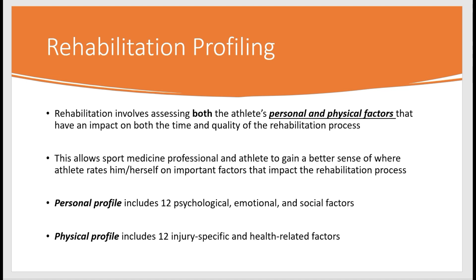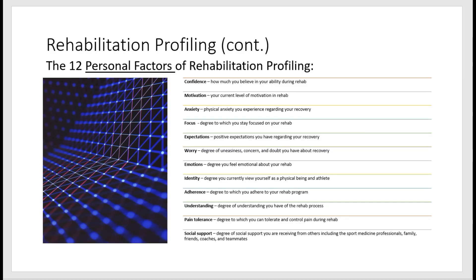The personal profile includes 12 psychological, emotional, and social factors, while the physical profile includes 12 injury-specific and health-related factors. The first personal factor is confidence — how much you believe in your ability during rehab. If the athlete has confidence in their recovery, it will speed the process. If the athlete lacks confidence about recovery, the recovery process will slow down.